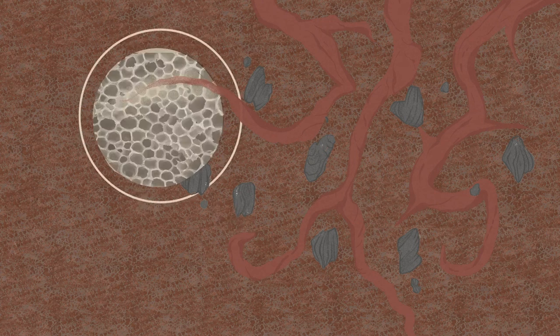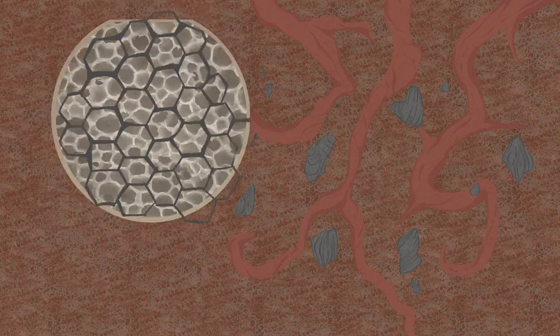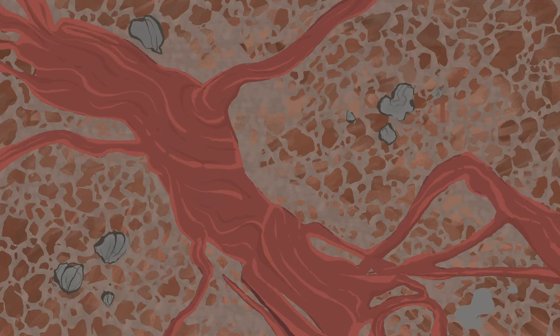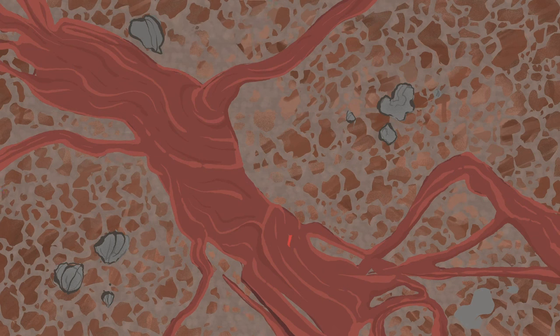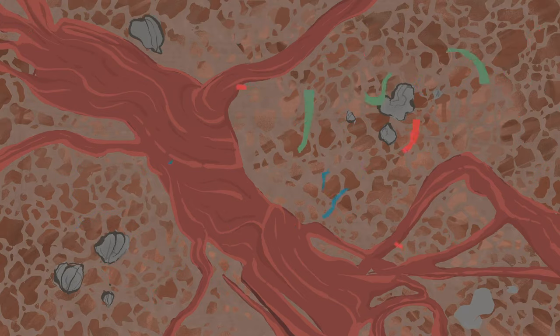Physical: Biochar's microscopic honeycomb structure improves the aeration, water-holding capacity, and nutrient retention of soil and stops it getting compacted, meaning all the essentials that plant roots need are readily available and easily accessible.